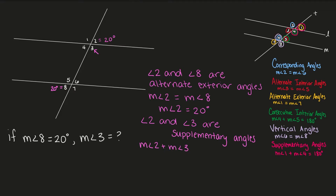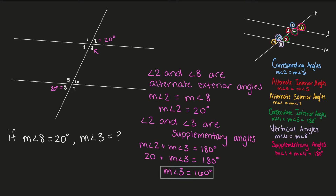Angle 2 plus angle 3 equals 180 degrees. When solving these problems, there may be more than one way to solve them, but I'm going to display one potential way. If you get to the same answer using a different method, that's totally fine as long as you're using the appropriate rules — keep in mind there are multiple ways to solve these problems.